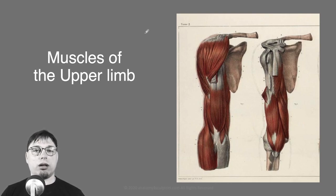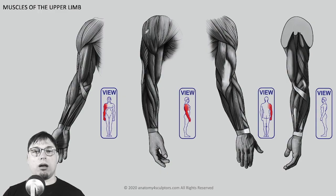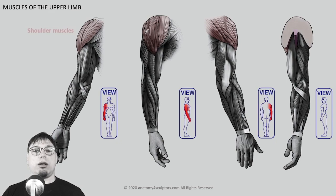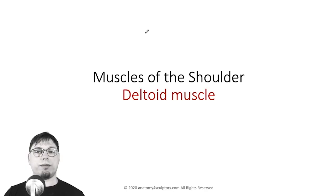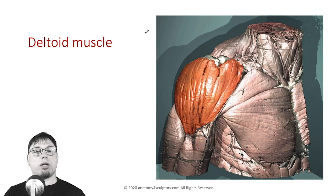Now it's time for the muscles of the upper limb. The muscles of the upper limb can be divided into four groups, similarly to the bones: shoulder muscles, arm muscles, forearm muscles, and hand muscles. Now it's time to talk about the shoulder muscles.